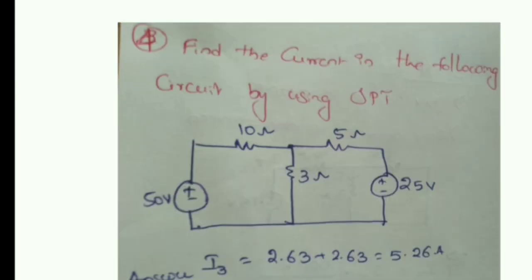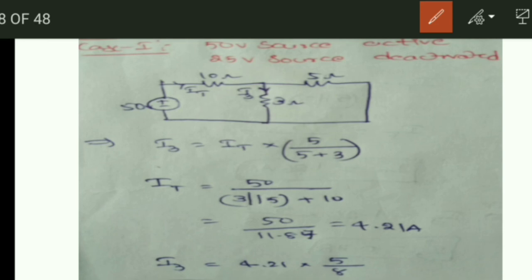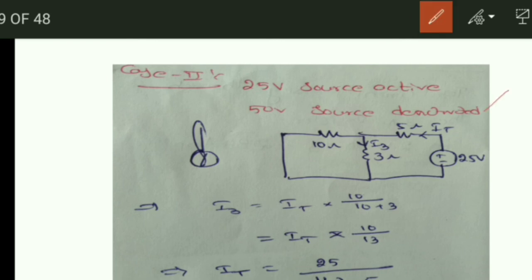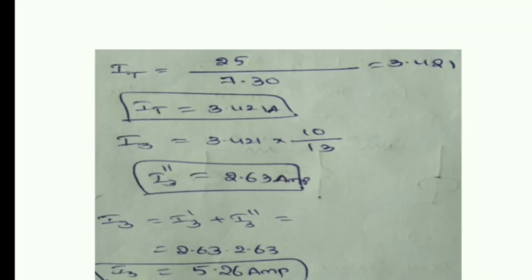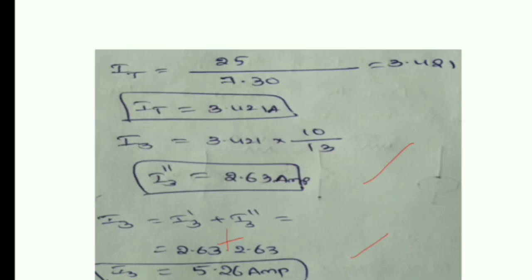For the next problem, finding the current through the circuit using the superposition theorem: with a 50V source and a 25V source. Case 1 — 50V activated, 25V deactivated: I3 = 4.21A after applying current division. Case 2 — 25V activated, 50V deactivated: I3' = 2.63A. Algebraic sum: 2.63 + 2.63 = 5.26 amperes. These are the problems based on the superposition theorem.